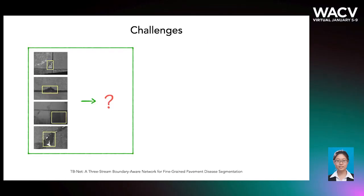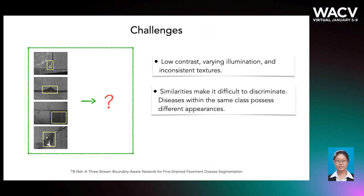There are three challenges in this task. First, images of pavement surfaces tend to contain noises due to low contrast, varying illumination, and inconsistent textures. Second, similarities among some certain classes make it difficult to discriminate. Besides, diseases within the same class may possess quite different appearances. In addition, these classes have a large variety of shapes and sizes which poses more challenges towards detailed segmentation.